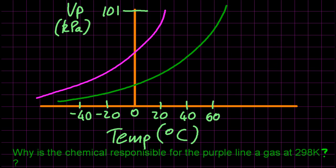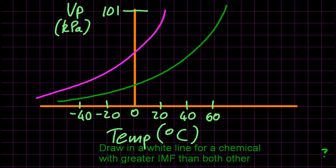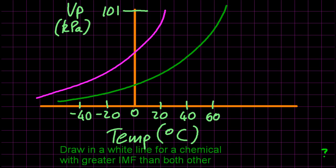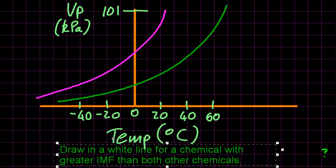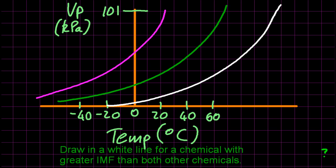The final question: drawing a white line for a chemical with a greater intermolecular force than the other chemicals. A greater intermolecular force means it's going to take a higher temperature to boil it. So when it hits 101, it must be at a higher temperature. You've got to maintain that curvy shape.